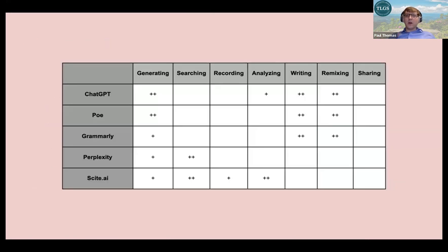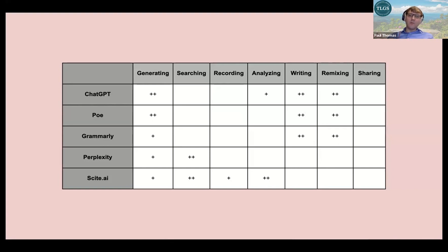Here's a chart of some programs focused on generating information, though they span across other phases as well. Something like ChatGPT or Poe are writing tools but also good at generating and remixing information. Grammarly similarly. Perplexity, more of a search engine, can also help you come up with concepts and ideas when you ask it a question. So there is variability — not every program is good for only one thing.